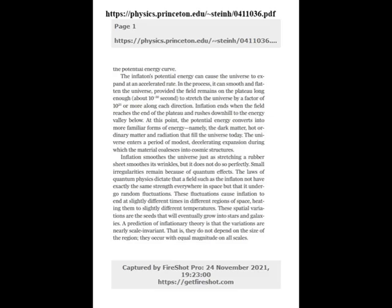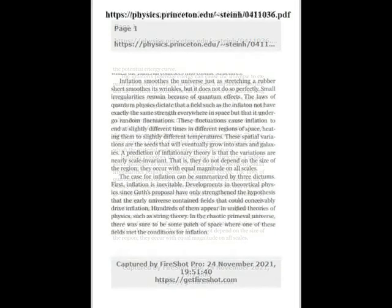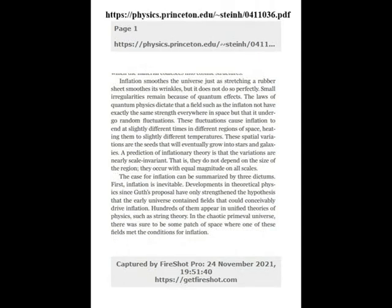Inflation ends when the field reaches the end of the plateau and rushes downhill to the energy valley below. At this point, the potential energy converts into more familiar forms of energy — namely, dark matter, hot ordinary matter and radiation that fill the universe today. The universe enters a period of modest, decelerating expansion during which the material coalesces into cosmic structures. Inflation smooths the universe just as stretching a rubber sheet smooths its wrinkles, but it does not do so perfectly. Small irregularities remain because of quantum effects. The laws of quantum physics dictate that a field such as the inflaton cannot have exactly the same strength everywhere in space, but undergoes random fluctuations. These fluctuations cause inflation to end at slightly different times in different regions of space, heating them to slightly different temperatures. These spatial variations are the seeds that will eventually grow into stars and galaxies.